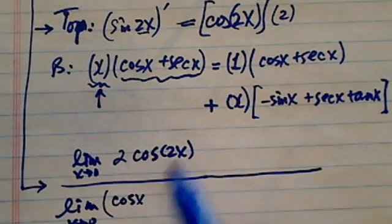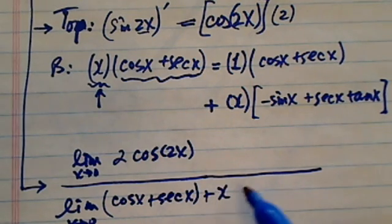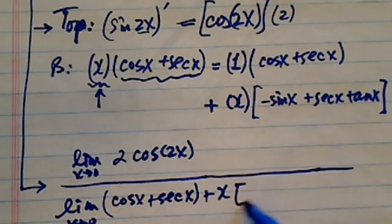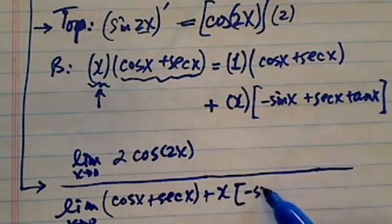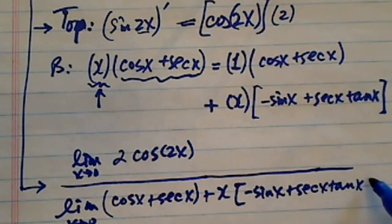I have two terms. Let's make it bigger. Plus secant of x plus x times this big, long, messy thing. Minus sine of x plus secant of x tangent of x over here.